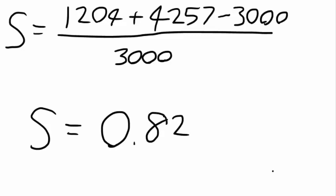Since this is a positive number, economies of scope does exist. It would be better to produce both products together in this situation as opposed to producing them separately. That concludes this video on economies of scope.